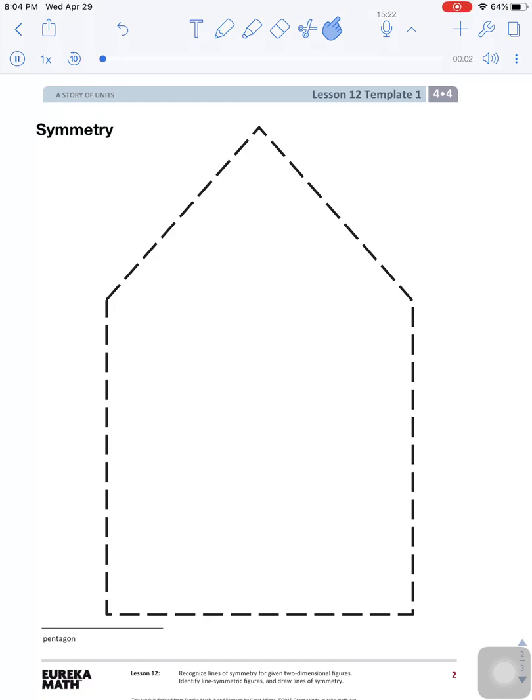Good morning, fourth graders. Today our math lesson is on identifying a line of symmetry in a shape. A line of symmetry exists if you can fold a given shape exactly in half, and one half exactly matches the other half.